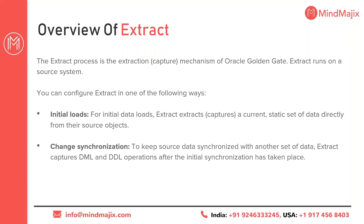Initial load is one of the capturing mechanisms that directly reads all the data. Whatever table data you want to load into the target database, using initial load you can initially make the data at the same level in both source and target. For example, if in the source you have a table with 1 million records but the table doesn't exist in the target, GoldenGate can create the table and load the data. You can go with initial load for this purpose.